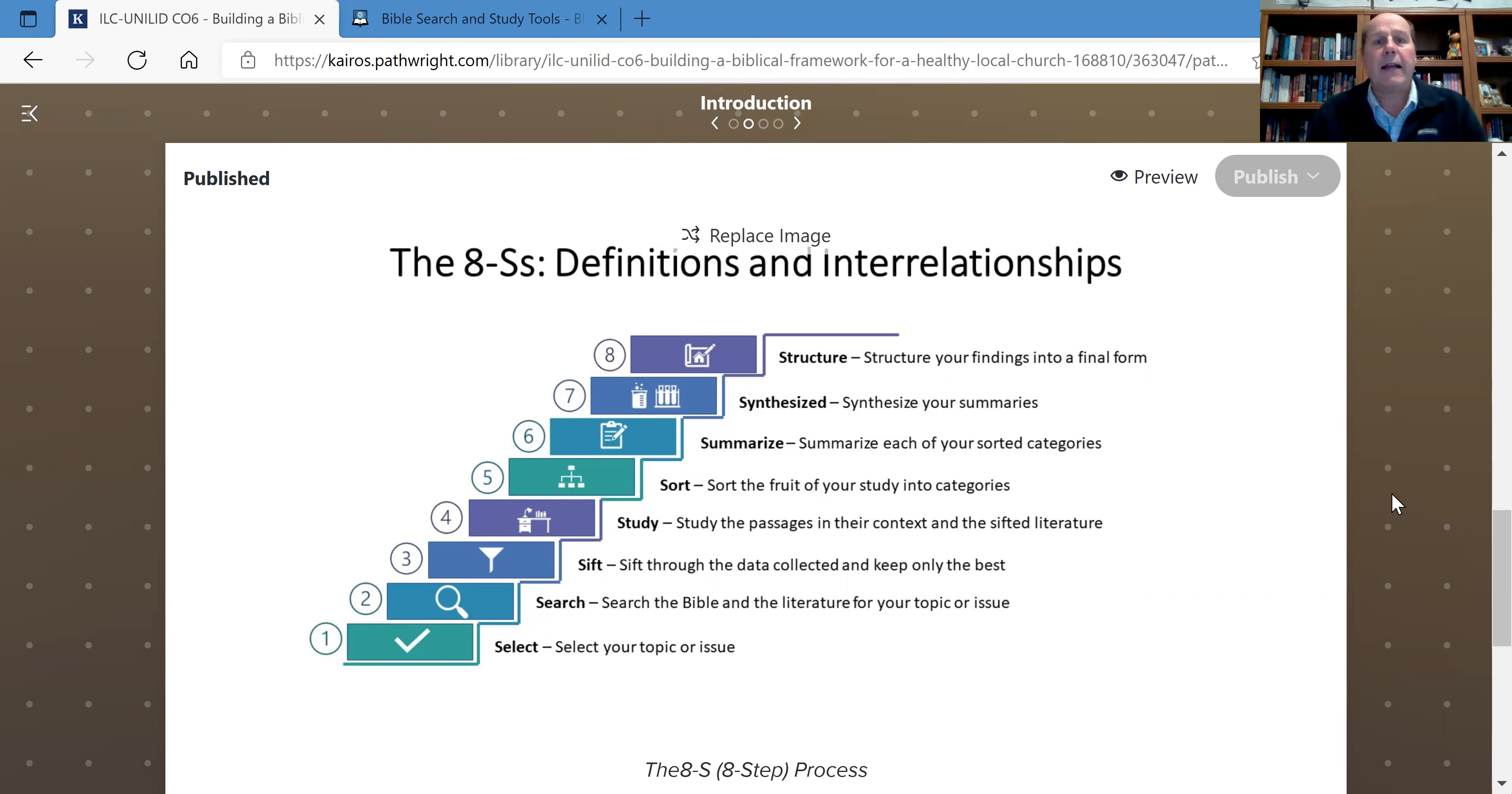The next step: after you've sorted, you now have maybe three or four different categories, and you're going to write summaries for each of those categories. That summary will help you understand the church is like this in this area, like this in that area, and so forth.